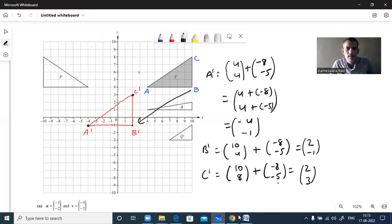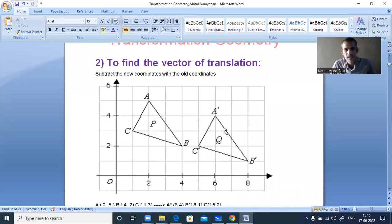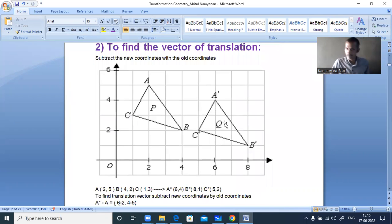Next to see one more thing. How to find vector of translation. Okay. Here the object is given, its image is also given. We just have to find vector of translation. How we will do now? From new coordinates you have to subtract old coordinates.